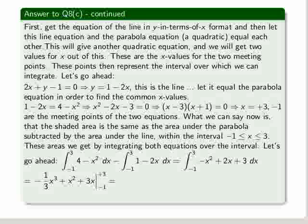Now those are three terms which are fairly easy to integrate. Minus x squared becomes minus a third x cubed. 2x becomes x squared. And 3 becomes 3x. And we have to evaluate that over the interval minus 1 to 3.